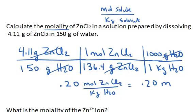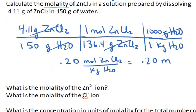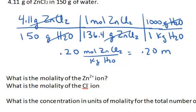Now here I've got the same questions that I had in the previous video. What is the molality of the zinc ion? Well, if you look at your formula in zinc chloride, for every one formula unit of zinc chloride, I have one zinc ion. So the mole concentration of zinc is going to be the same as what I calculated for the formula unit.